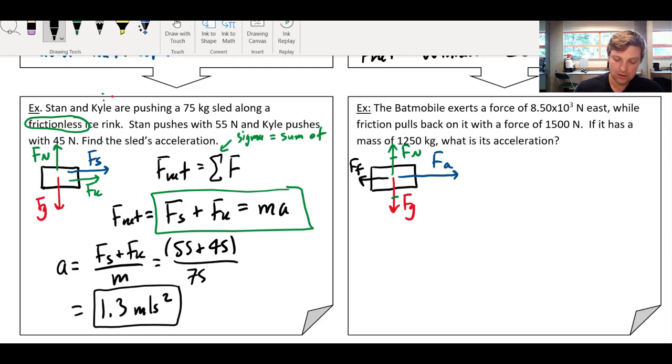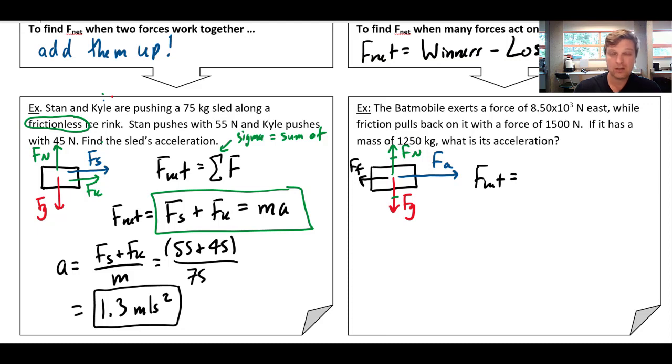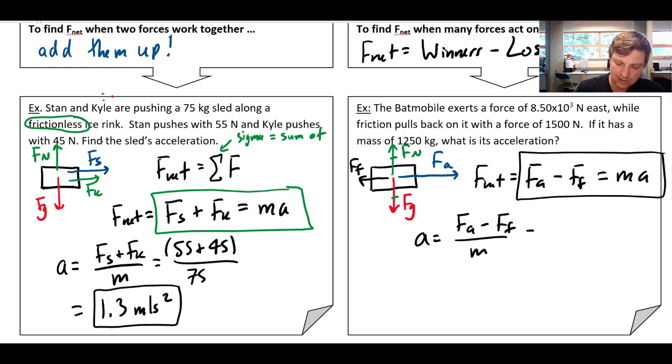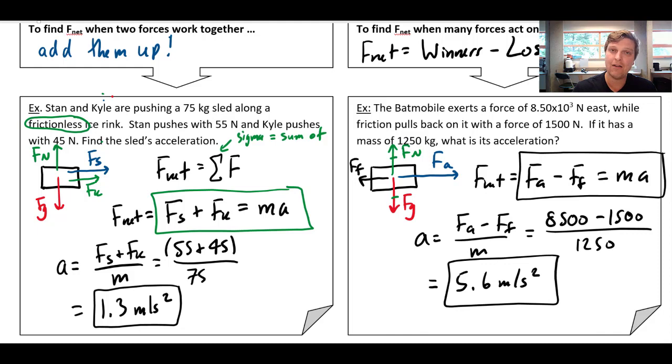So now I'm going to create my F-Net equation. So F-Net is going to be winners minus losers. So in this case, that's the applied force minus the friction force, and that equals MA. So again, that right there, such a critical first step. If you can do that, the rest of it's just algebra. And so the acceleration, same algebra to do, is just going to be an applied force minus the friction force all divided by the mass, which is 8,500 minus 1,500 all divided by 1,250. And this gives me an acceleration of right around 5.6 meters per second squared. Now again, I'm not specifying a direction, but I kind of have for my picture. The Batmobile is accelerating forwards, which makes sense. And then I've got my amount right there. Okay, so that's it for Newton's second law. All right. Thank you.